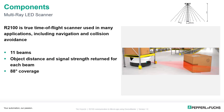The R2100 is a true time-of-flight scanner used in many applications including navigation and collision avoidance. It has 11 beams, each with an 8-degree separation, giving you a total coverage of 88 degrees. Max distance is 4 to 8 meters depending on the size and type of target in front of you.